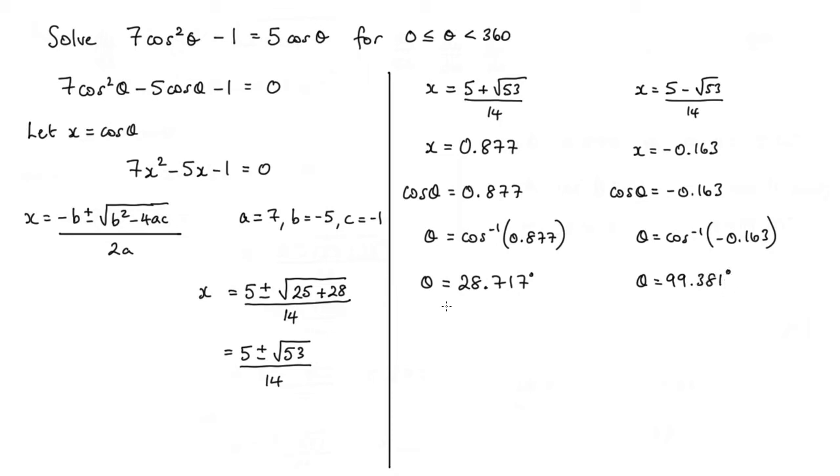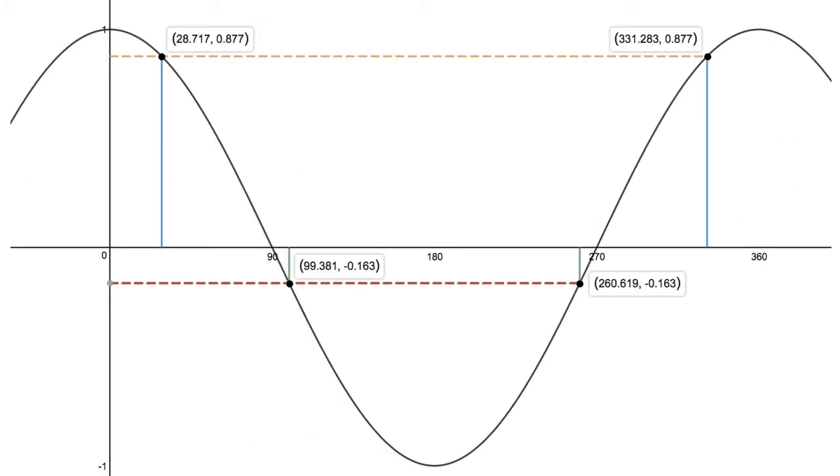Now we want all the values of theta between 0 and 360. Now if you know your trig graphs and your trig functions, you should be able to calculate that quite easily. What I like to do is actually look at the cosine graph, because we're dealing with the cos function here. Let's look at the cosine graph.